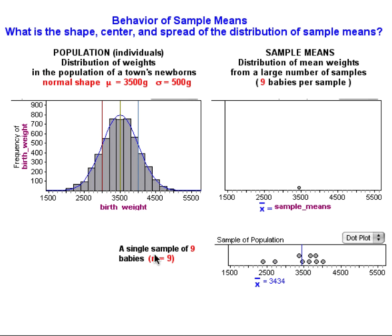Now I'm going to begin to take random samples. I've decided to sample 9 babies at a time. You will see the individual birth weights for each of the 9 babies in the sample indicated here and you will see the mean for the sample in blue.